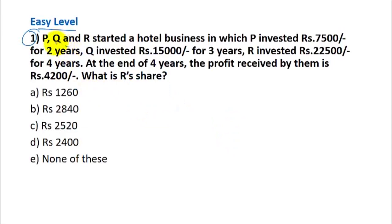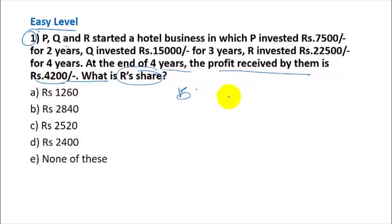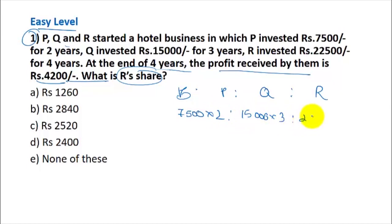Question 1: P, Q, and R started a hotel business. P invested ₹7,500 for 2 years, Q invested ₹15,000 for 3 years, and R invested ₹22,500 for 4 years. At the end of four years, how much profit has R received if the total profit is ₹4,200? We calculate the ratio P:Q:R as 7500×2 : 15000×3 : 22500×4.